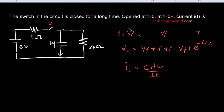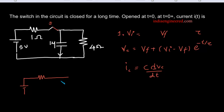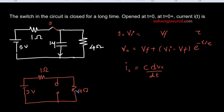The switch S in the circuit is closed for a long time. What happens is the capacitor charges to its final value. Now we have to find out the initial voltage. We know that when the switch is closed for a long time the capacitor will act as an open circuit. We can draw the equivalent circuit here for easier analysis. That means we have 5 volts, the 1 ohm resistor, the capacitor acting as open circuit, the 4 ohm, another 1 ohm, and 5 volts. We can apply the voltage divider rule to find out the initial voltage across the capacitor.